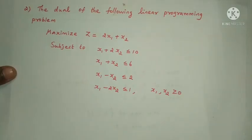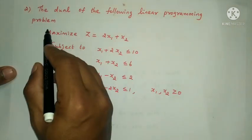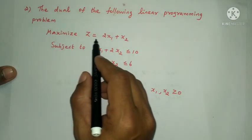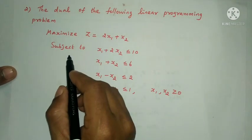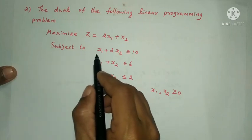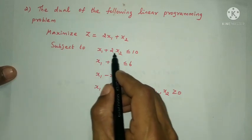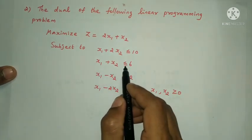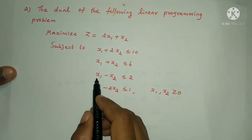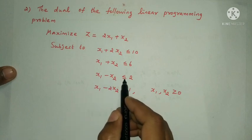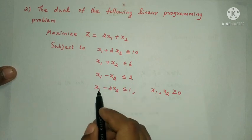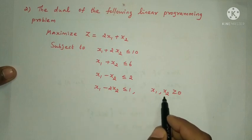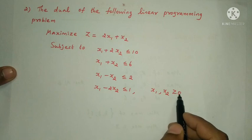Next question: find the dual of the following linear programming problem. Maximize z = 2x1 + x2, subject to the constraints: x1 + 2x2 ≤ 10, x1 + x2 ≤ 6, x1 − x2 ≤ 2, x1 − 2x2 ≤ 1, where x1, x2 ≥ 0.